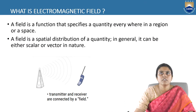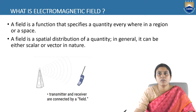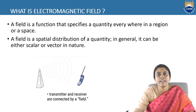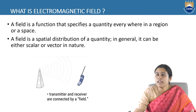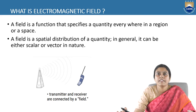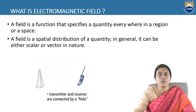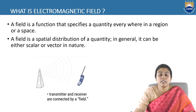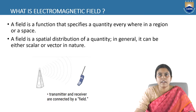First we have to discuss what is the magnetic field or what is field. A field is a function that specifies the quantity everywhere in a region or a space. In an area everywhere in a region or a space, we can feel some force — that area is known as a field. A field is a special distribution of a quantity. In general, it can be a scalar or it can be a vector. A scalar field may or may not have a certain direction, but a vector field means the force will be felt in a certain direction.